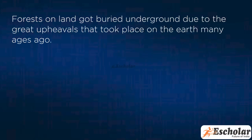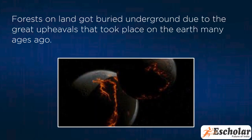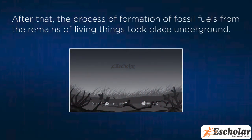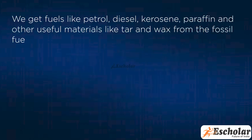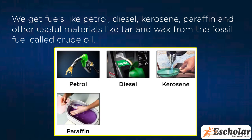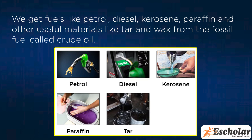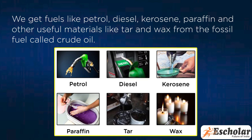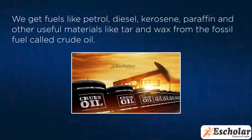Forests on land got buried underground due to the great upheavals that took place on the earth many ages ago. After that, the process of formation of fossil fuels from the remains of living things took place underground. We get fuels like petrol, diesel, kerosene, paraffin, and other useful materials like tar and wax from the fossil fuel called crude oil.